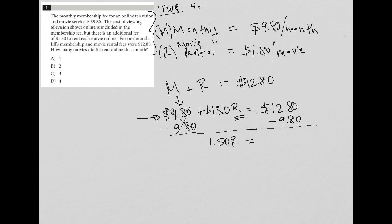This is the calculator section if you need to use your calculator. If not, we can say this is just equal to $3. Then I divide by $1.50 on both sides, and I get R is equal to 2. So she rented two movies, and therefore, the answer is choice B.